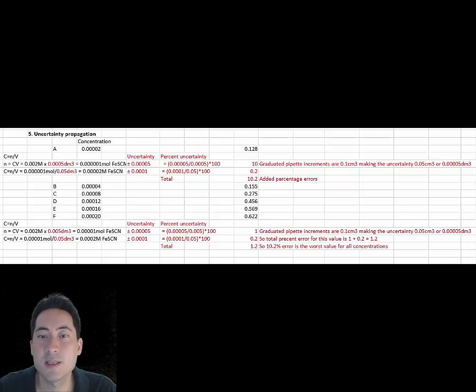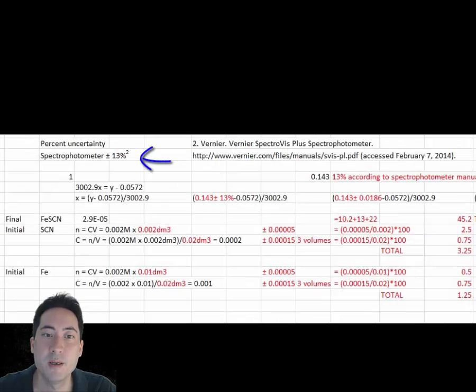The uncertainty for the largest standard F has a larger volume measurement, so the uncertainty is smaller. The calculation here comes to 1.2%. We take the largest uncertainty, so for the standards, this will be standard A at 10.2%.